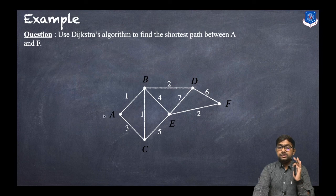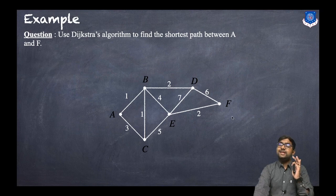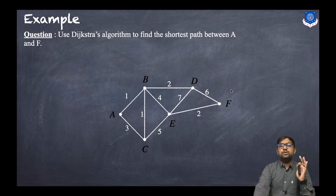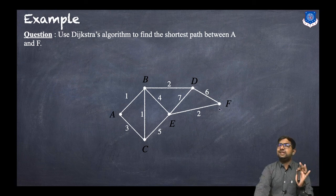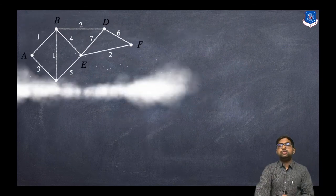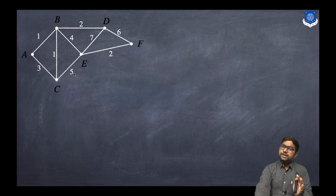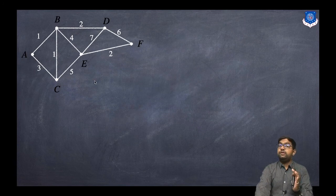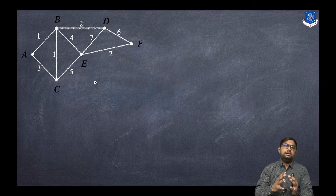So A is the source vertex and F is the destination vertex. We need to find the shortest path between A and F. This is the same graph. So what we will do — we will create one table and proceed further.